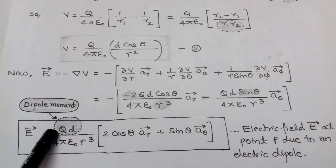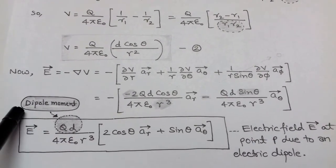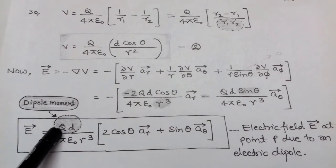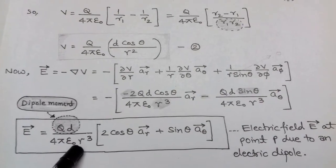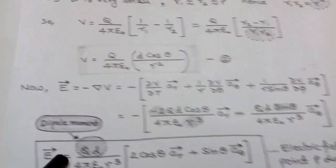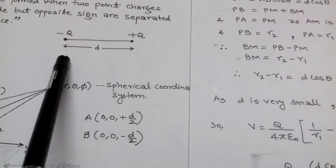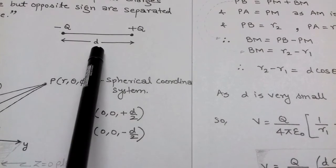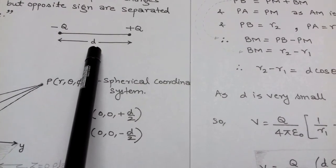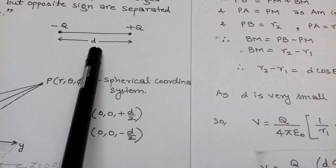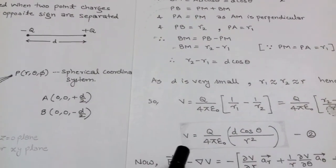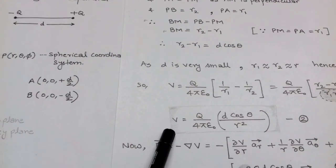The numerator term q × d is nothing but the dipole moment. An electric dipole has a dipole moment equal to the product of the magnitude of either charge and the distance between them. This concludes the concept of the electric dipole — from it, we can determine both the electric potential and the electric field.